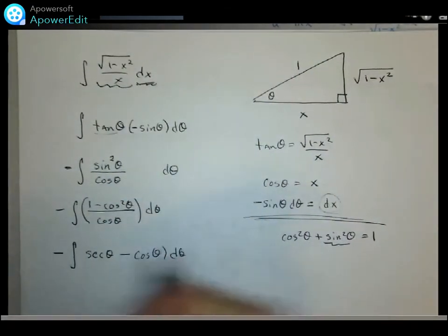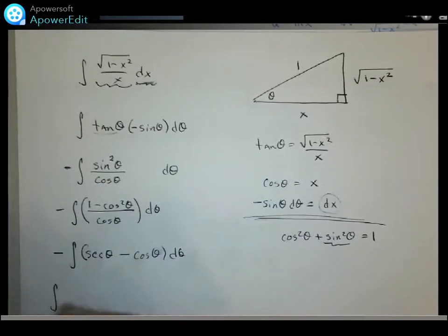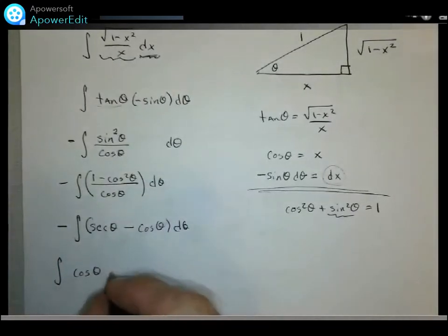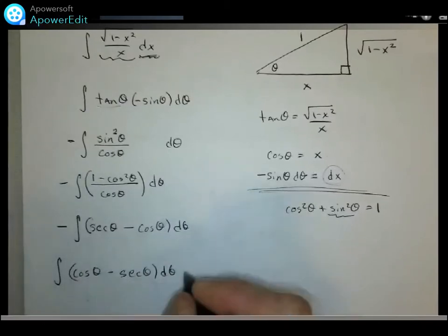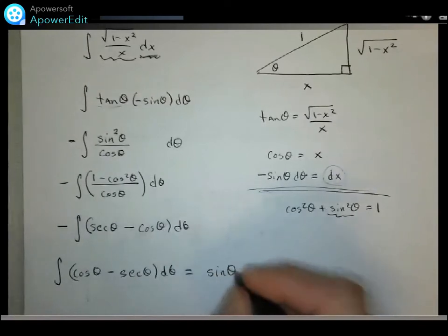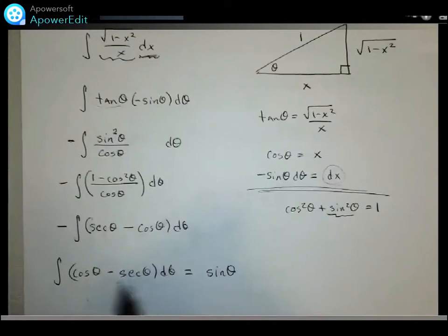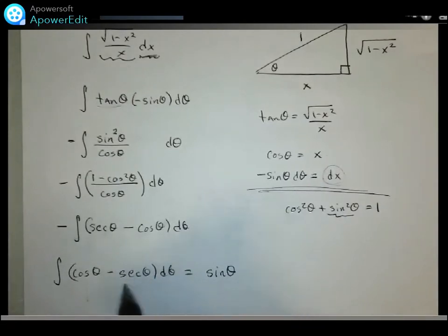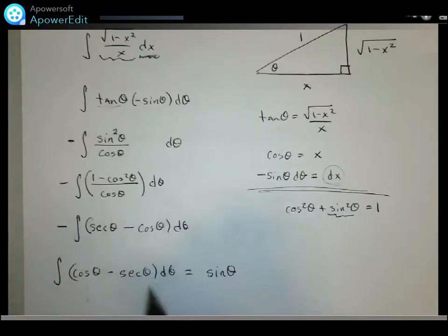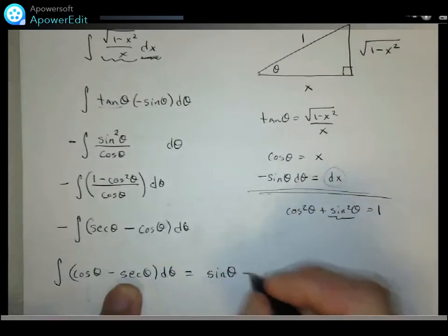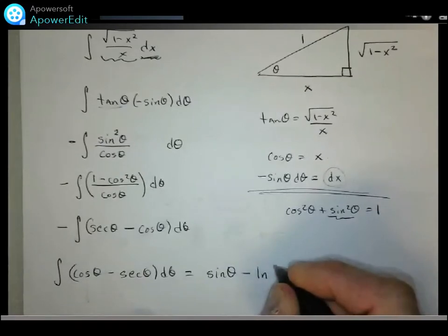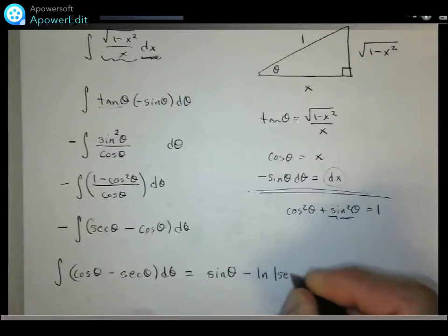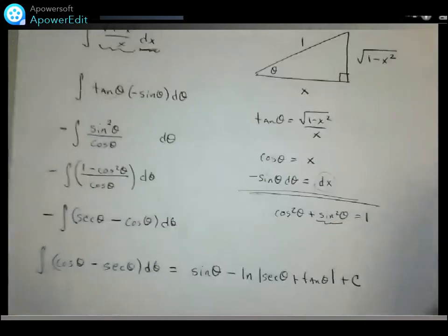Now integrating: the antiderivative of cos(θ) is sin(θ), and the antiderivative of sec(θ) is ln|sec(θ) + tan(θ)|. There's a standard trick for that antiderivative involving multiplying numerator and denominator by a clever factor, but I won't derive it here — it's a standard result. So the integral evaluates to sin(θ) − ln|sec(θ) + tan(θ)| + C.